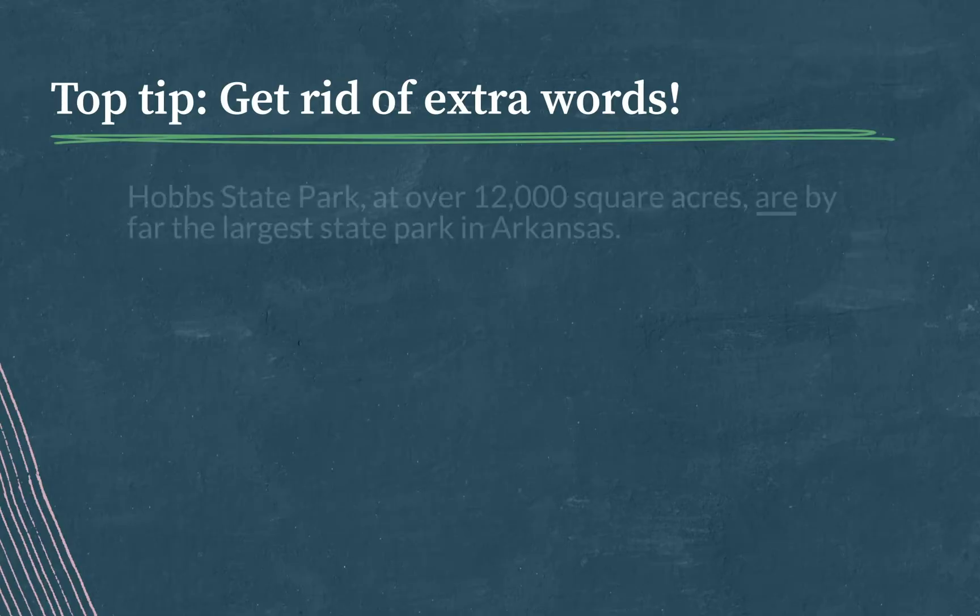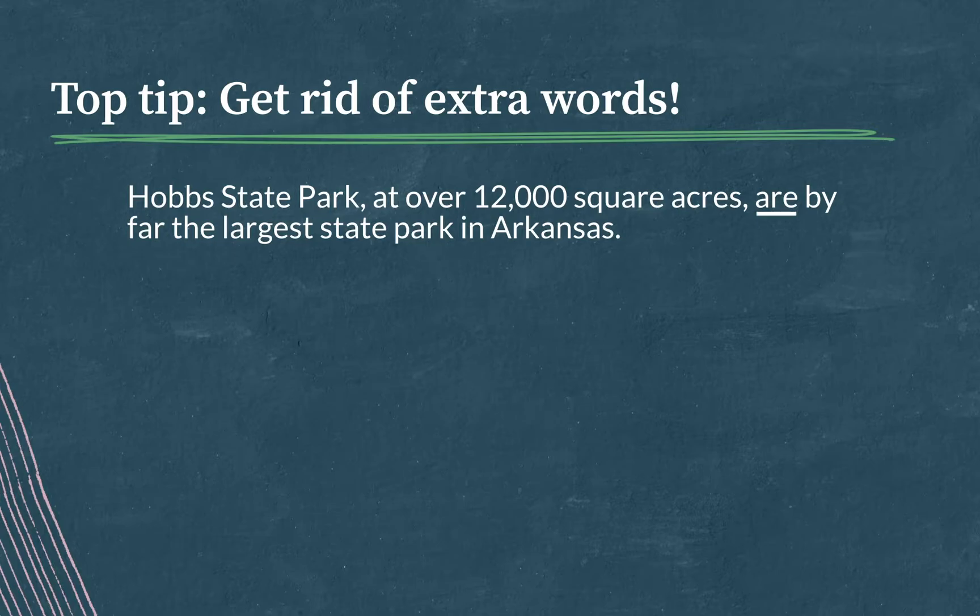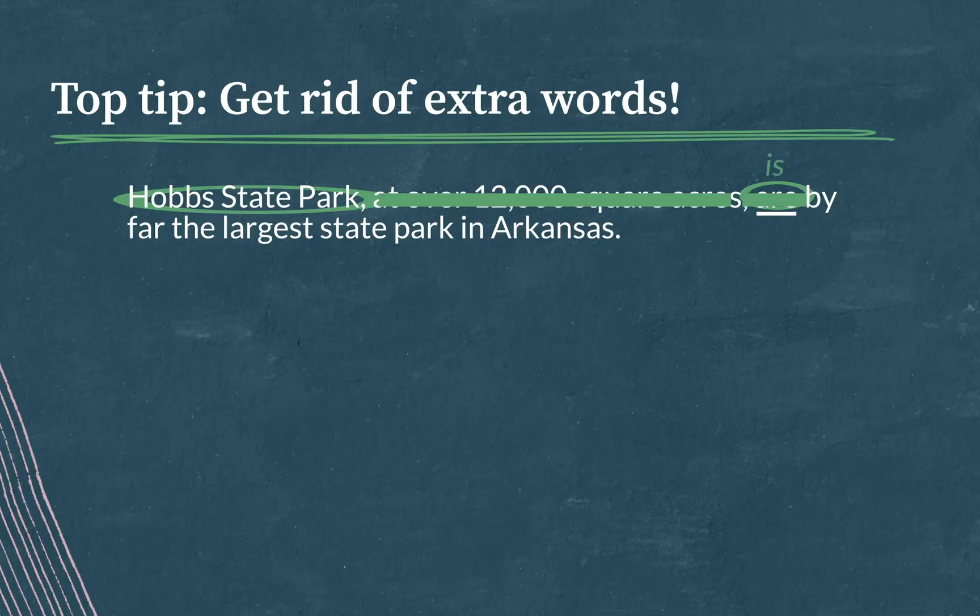So in the sentence, Hobbes State Park at over 12,000 acres are by far the largest state park in Arkansas. What's the subject? What's doing the main action of the sentence? Well I guess Hobbes State Park, right, is doing the main action of the sentence, and what's the verb it's doing? The verb it's doing is are. All this stuff in the middle, this stuff between the commas, we can toss it, cross it off for the purposes of evaluating the sentence so we can get that subject right next to that verb. And then, ask yourself, does this sound right? Is Hobbes State Park singular or plural? Park is singular. Are is plural. Hobbes State Park are doesn't sound right. It doesn't match up. So I would want to change it to is. Hobbes State Park is by far the largest state park in Arkansas.